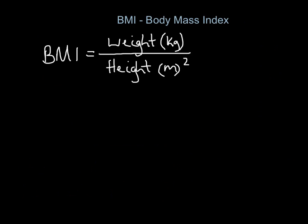There are a couple of key things you need to remember. You need to remember the units - if you don't put the units in, you don't get the marks. It's not centimeters, it's meters; it's not grams, it's kilograms. And the key thing is you only square the height - you don't square the weight, it's only the height that gets squared. Think of it another way: it's weight divided by height times height. That is what squared means - you times something by itself. That is the equation you need in order to calculate your BMI.